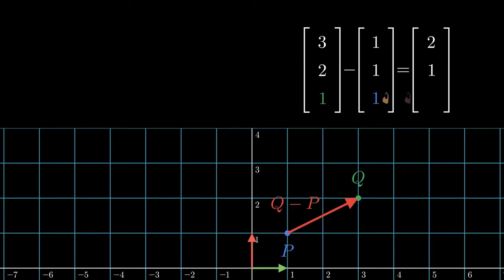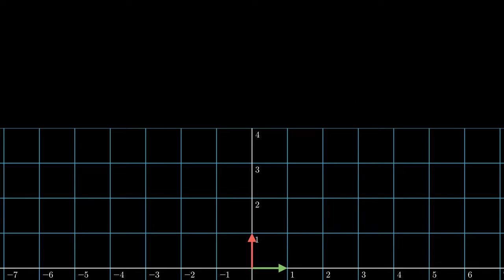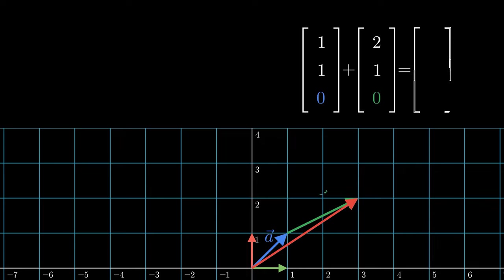See the last digit, 1 minus 1 is 0, meaning a point minus a point is a vector. Another way of creating a vector is adding two vectors. Seen in homogeneous coordinates, the last digits are 0 plus 0 is still 0, meaning a vector adds a vector is still a vector.